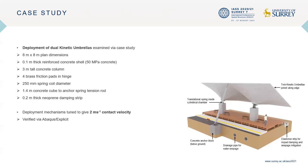The mechanisms of deployment are further explored through a case study where kinetic umbrellas are deployed in pairs of two with a single spring tension rod, as shown in the illustration. Each umbrella measures eight meters by eight meters in plan. They are constructed from 0.1 meter thick reinforced concrete and elevated by three meter tall concrete columns. Four brass friction pads are used in the hinge, whereas a spring with a coil diameter of 250 millimeters is used to initiate deployment. A 1.4 meter square concrete cube is used to anchor the spring to the ground, and a 0.2 meter thick neoprene strip provides additional damping at the base.